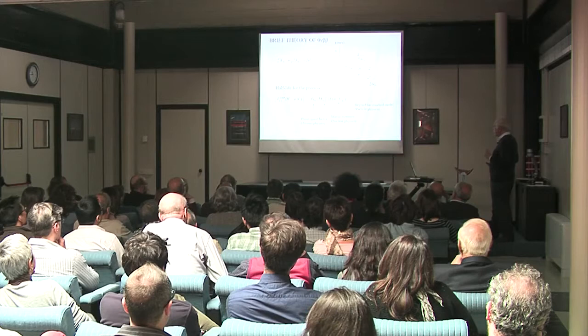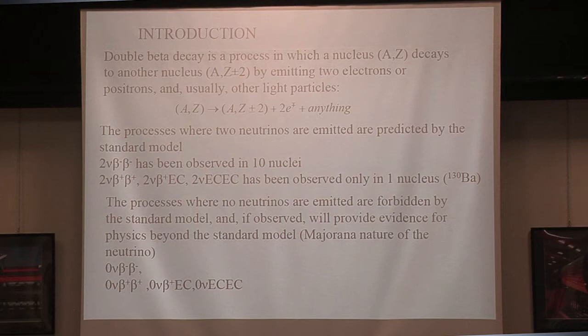Double beta decay is a process in which a nucleus A-Z decays to another nucleus, A-(Z plus or minus 2), by emitting two electrons or positrons and usually other light particles. And if observed, they will provide evidence for physics beyond the standard model, in particular about the Majorana nature of the neutrino.